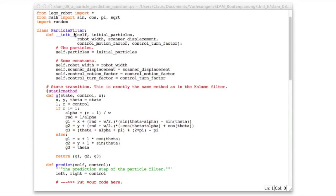So here's the code for the particle filter. And many things will look very familiar because they are very similar to the Kalman filter code, which we had in the last unit.